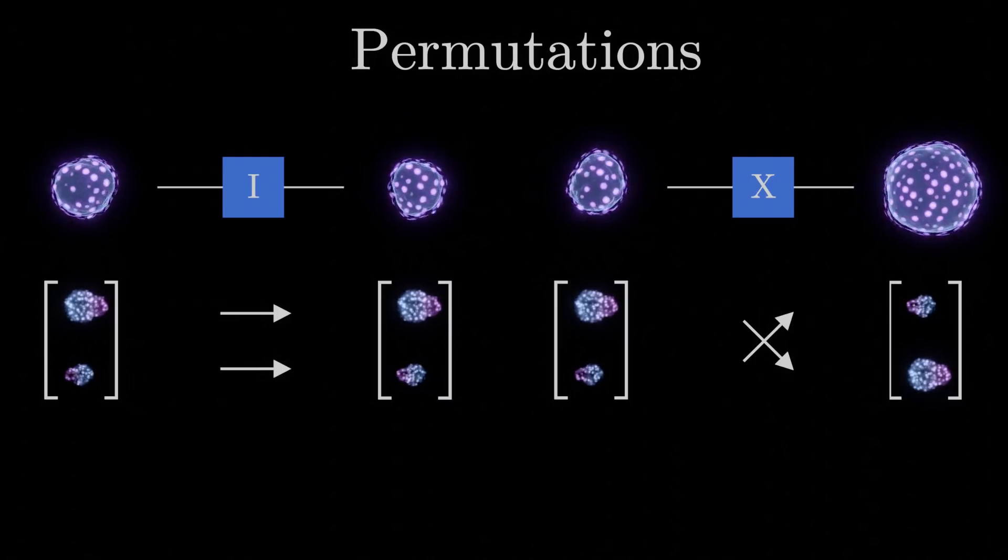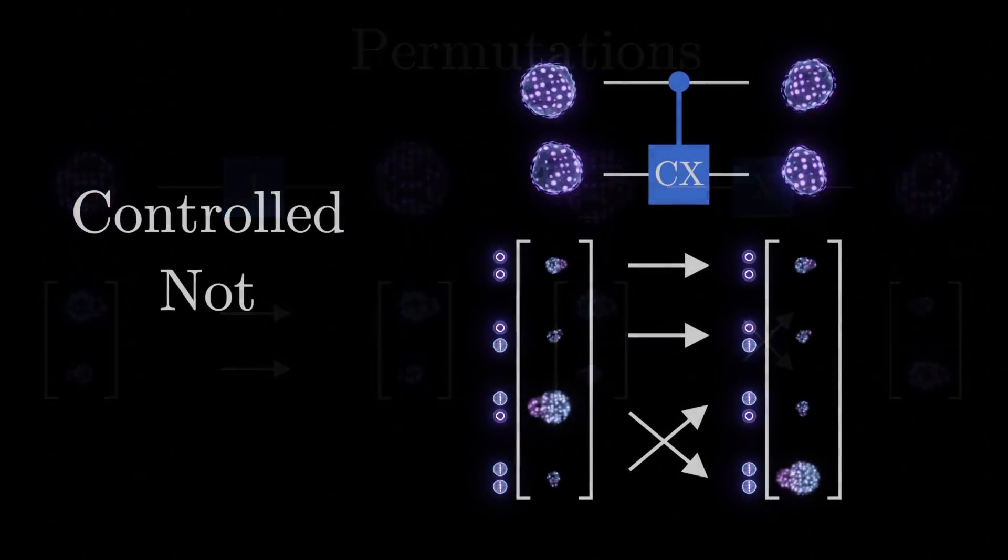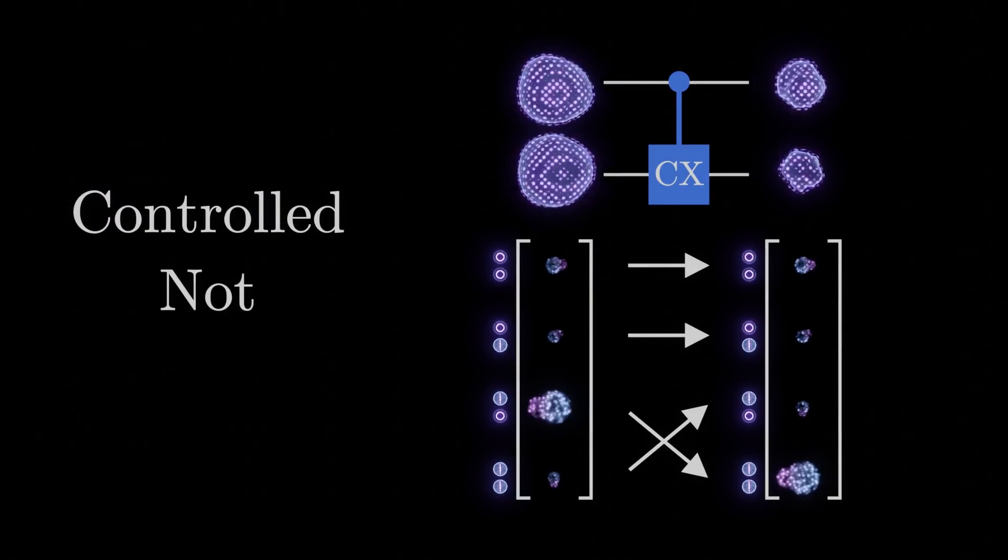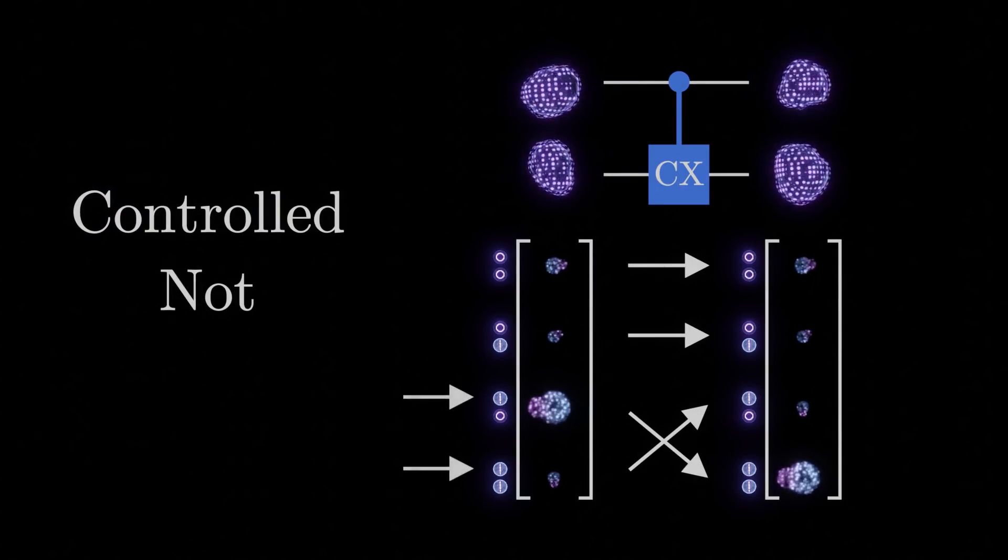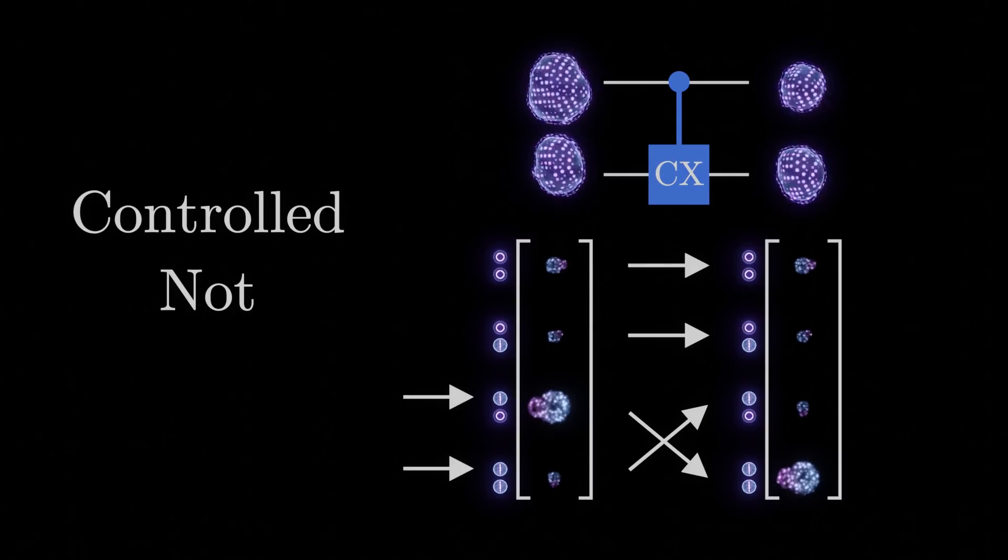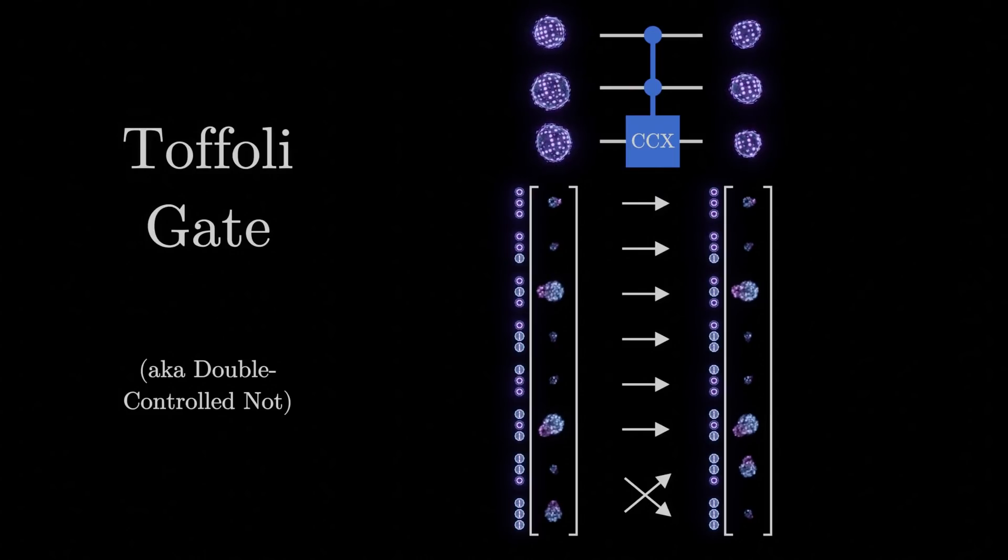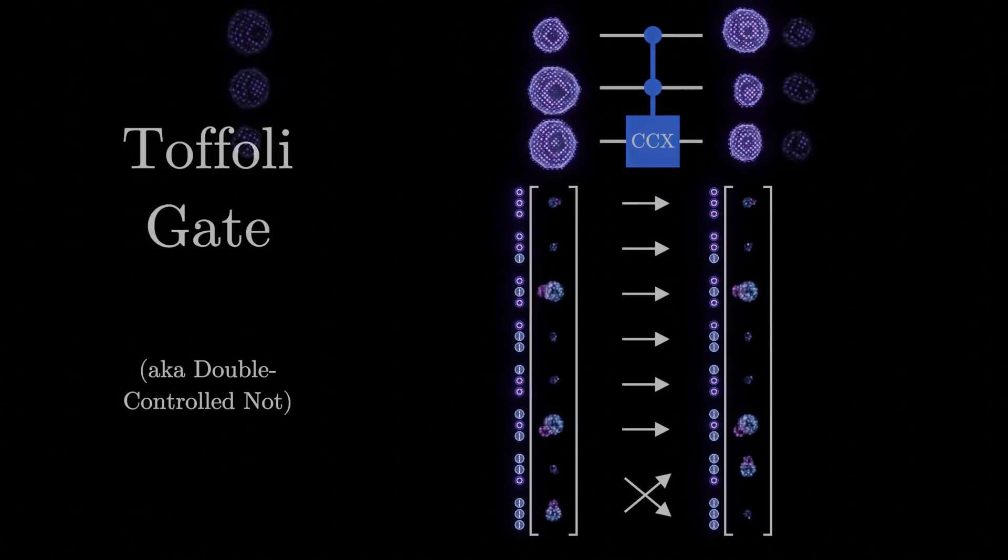The next permutation we'll look at is called the controlled NOT. The rationale behind this name is that it acts like a NOT gate, but only for states where a second control qubit is one. Extending this concept further, we get the Toffoli gate, also called a double controlled NOT.